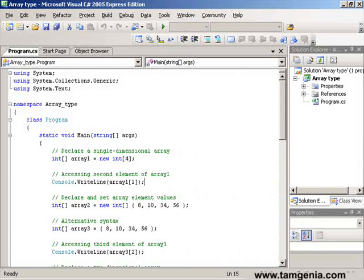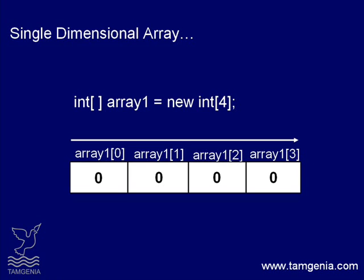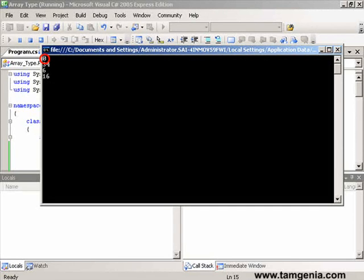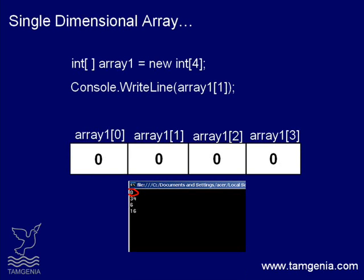As we already told, the first one is a single dimensional array. It has a size of 4. This array contains the elements from array[0] to array[3]. In this example all the array elements are initialized to 0, and we initialize them with the default value 0. Console.WriteLine writes the value of the second element of array[1] on the console and it will be 0. See the first line we are getting on console is 0.